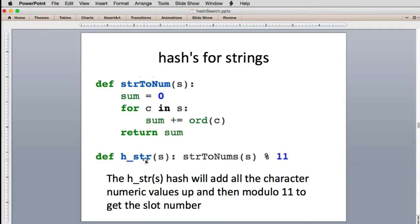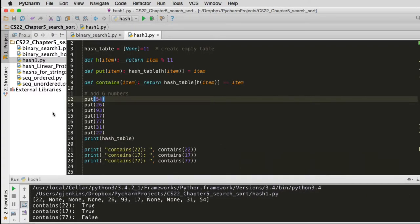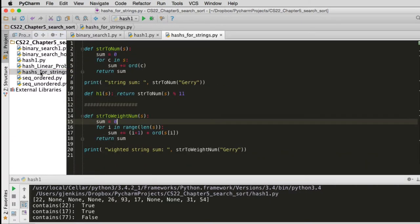And then I defined a new hash function that takes that number and modulo 11, the size of our table. I wrote a little code to run this. Let me show you that. So that's in the hash for strings. This is the first function and you'll see it converts my name to a number. We're going to see my name printing out as a number.